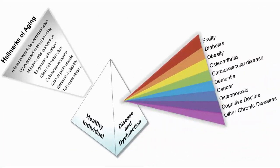There are nine identified hallmarks of ageing, though others have been proposed. The unitary theory of fundamental ageing, developed by Dr. Kirkland, posits that targeting one of these processes may impact some or all of the others. Cellular senescence has been bidirectionally linked to the other hallmarks — that is to say, accumulation of senescent cells causes the other hallmarks and is also caused by them.